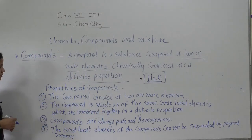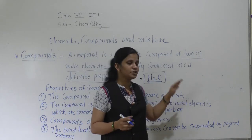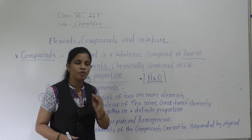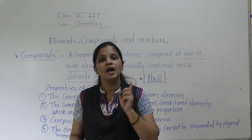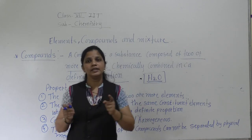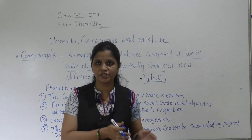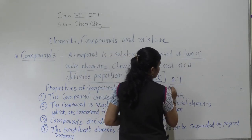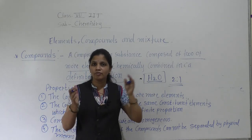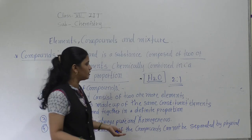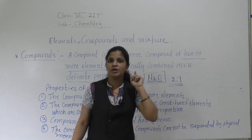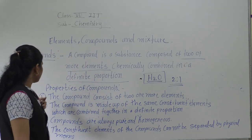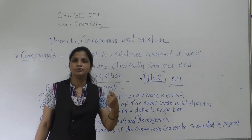The second property of a compound is that the compound is made up of the same constituent elements. See water — it is made up of the same constituent elements, meaning the water molecule is made up of only hydrogen and oxygen, in the same fixed proportion: two hydrogen atoms and one oxygen atom. This ratio is fixed. Even if you take more molecules of water, the proportion remains the same — 2:1. Two atoms of hydrogen and one atom of oxygen. This is the second property — the compound is made up of the same constituent elements.